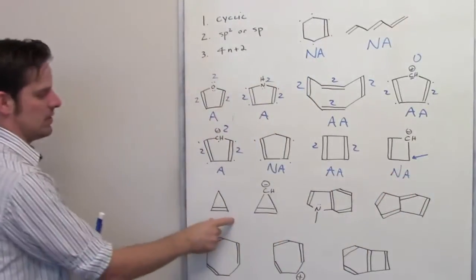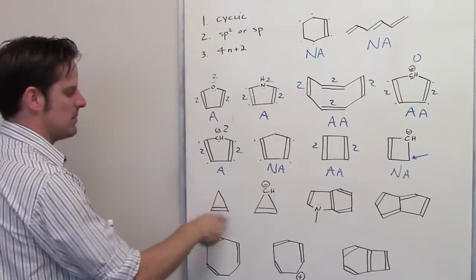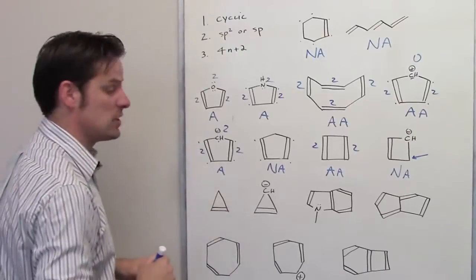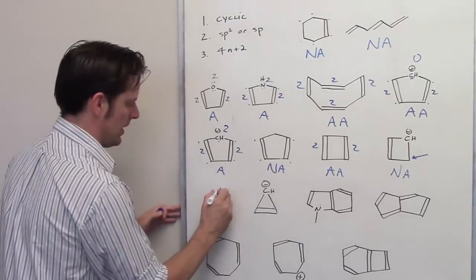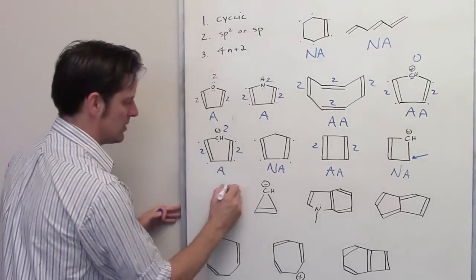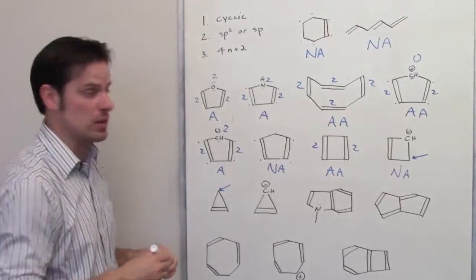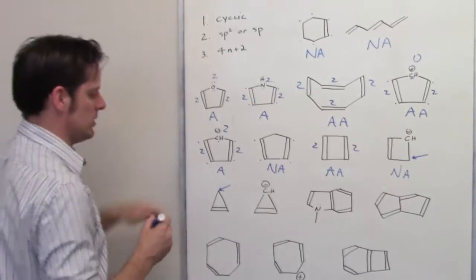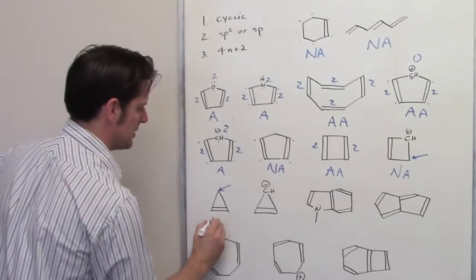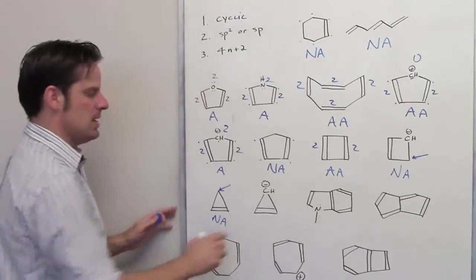Look at this molecule. Is it cyclic? Yes. Are all of the atoms in it sp2 or sp hybridized? No — that carbon right there has two hydrogens on it, making it sp3. So it meets criterion 1, but not 2, which means it is non-aromatic.